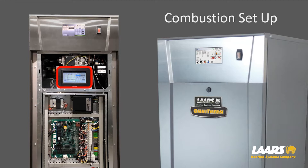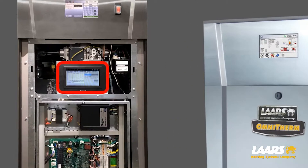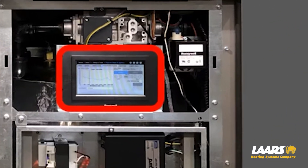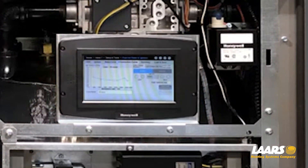Most people are familiar with setting up combustion where you give the boiler an RPM or fan speed — for example, high fire or low fire — and then dial in your CO2 using a screwdriver or Allen wrench on the gas valve. With the Omni Therm, we use a digital display to dial that in.